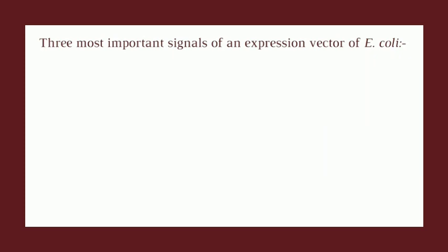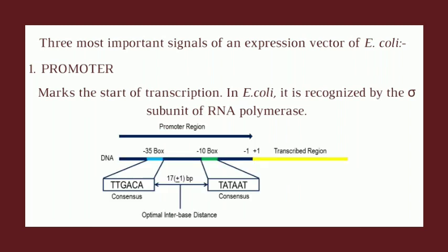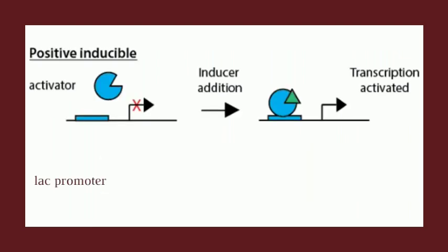The promoter marks the start of transcription. In E. coli, it is recognized by the sigma subunit of the RNA polymerase holoenzyme. The most basic and common E. coli promoter is the lac promoter, which is a strong promoter from the natural lac operon that controls transcription of the lacZ genes. Some other strong and inducible prokaryotic promoters include the natural trp and the synthetic tac promoters.